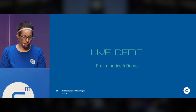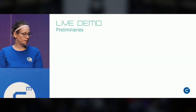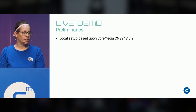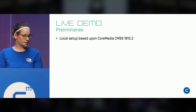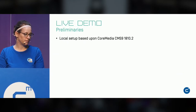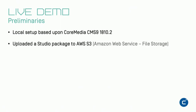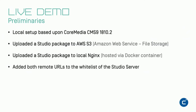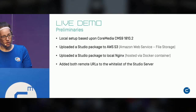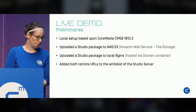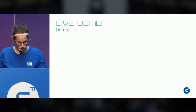For each package in this list, the package loader requests the package. We've implemented a filter that looks up from which location to load the package — either it loads it from the static resources directly, or it proxies it from the remote server. When everything is loaded, you see the studio UI. Now for the live demo: I have a local setup based on CoreMedia product CMS 9, version 8.10.2. I've already uploaded a studio package to AWS S3 and another to my local Nginx server, and both URLs are already added to my whitelist.